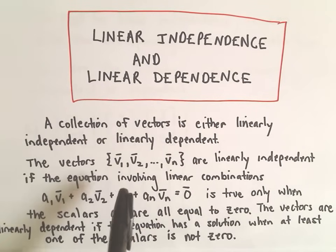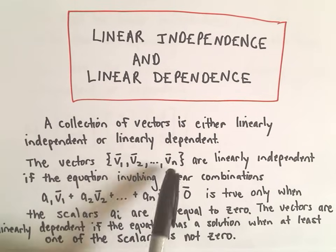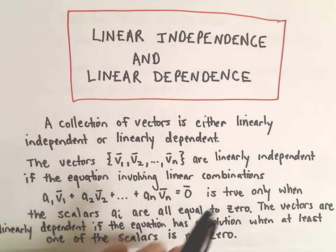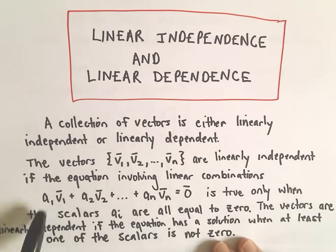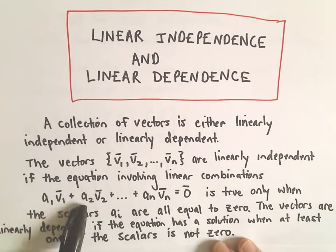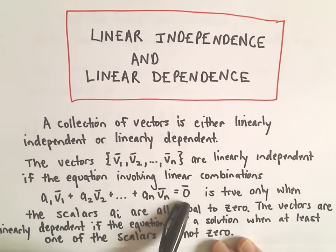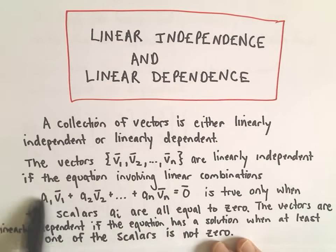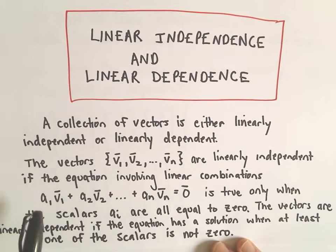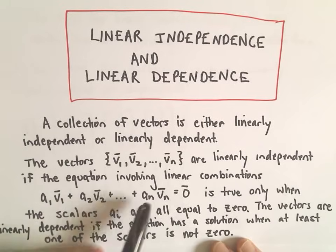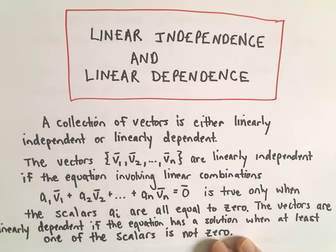And what we say, so we say the vectors v sub 1, v sub 2, v sub n are linearly independent if we look at the linear combination a sub 1 v sub 1 plus a sub 2 v sub 2 plus dot dot dot up to a sub n v sub n, when we set that equal to the zero vector, if the only solution to this equation is when the a sub 1, a sub 2, a sub n are all zero, we say those vectors are linearly independent.